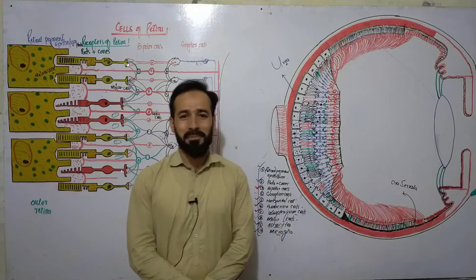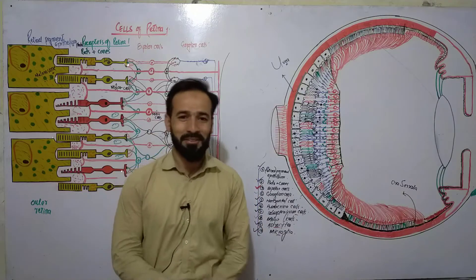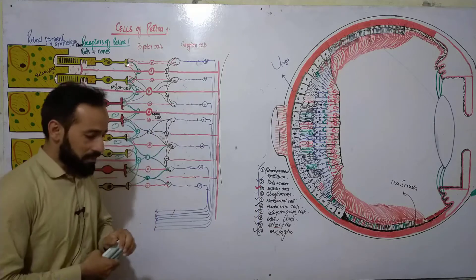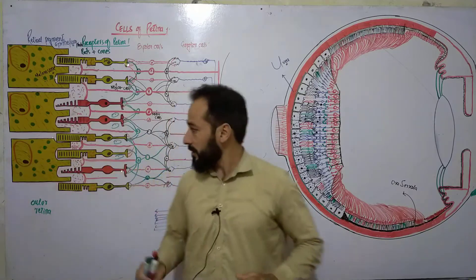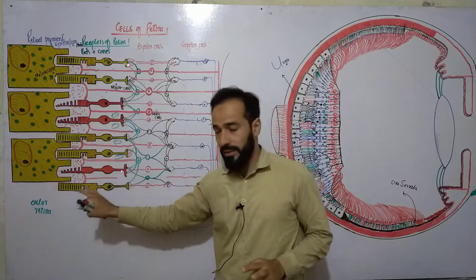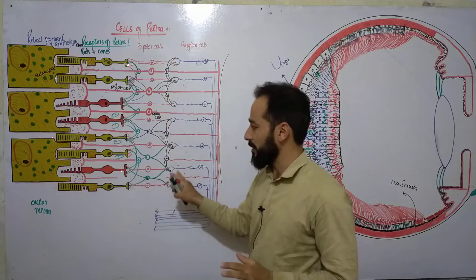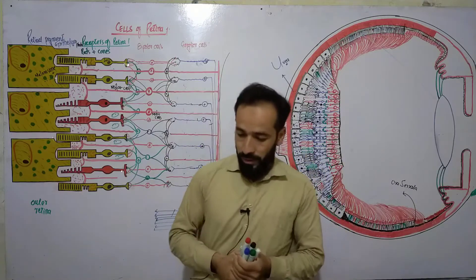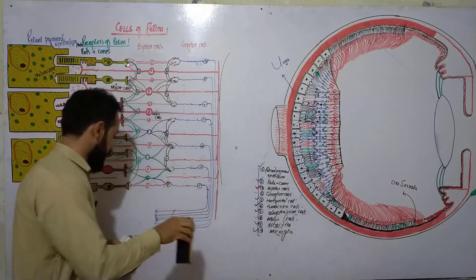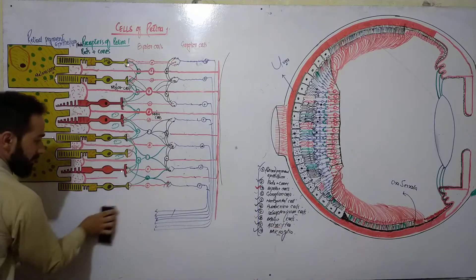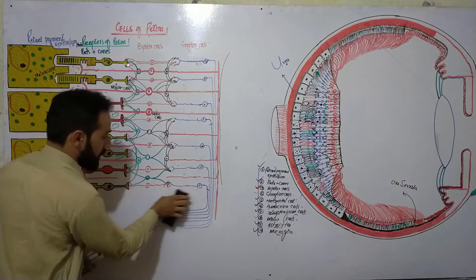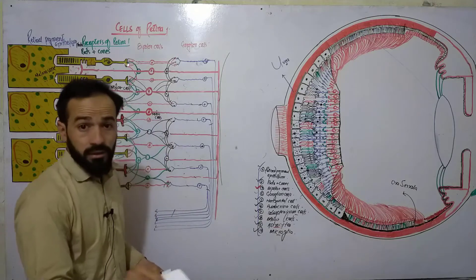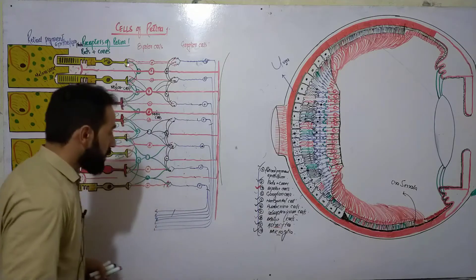Hello my dear friends, welcome back. We are discussing about the structure of the human eye. In the previous lecture, I discussed about the cells of the retina in great detail. I hope you have watched that lecture and gained some knowledge of the cells of the retina — how many types of cells are found in the retina.